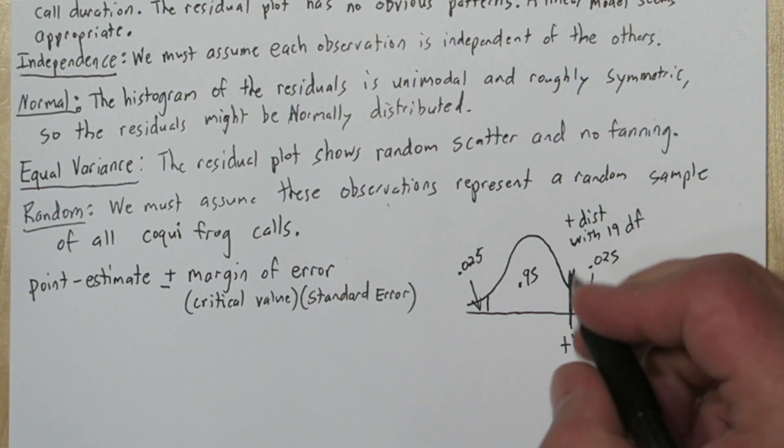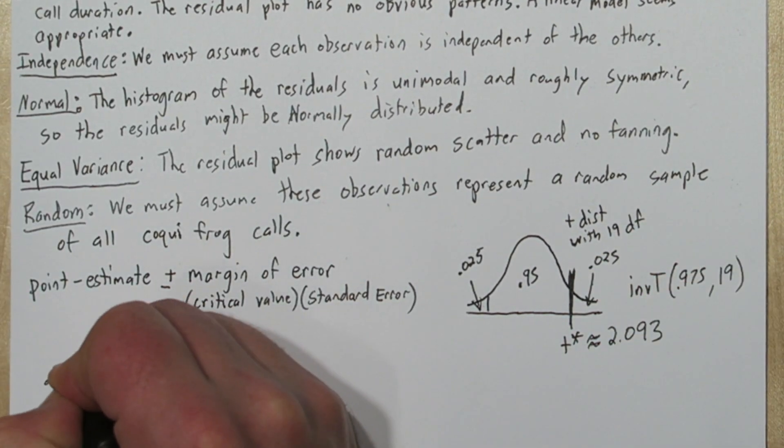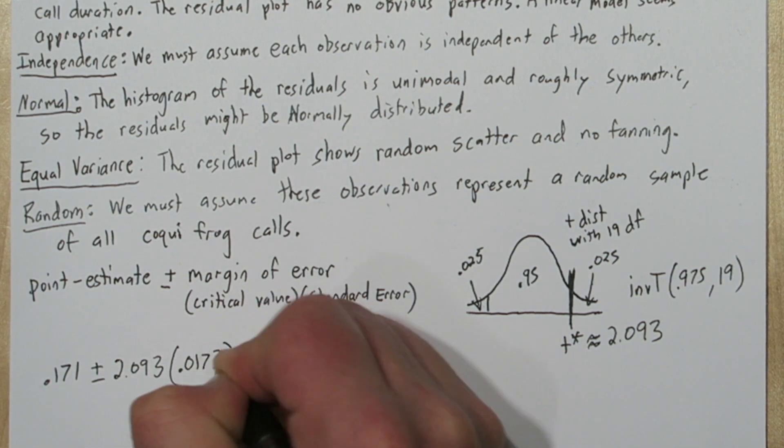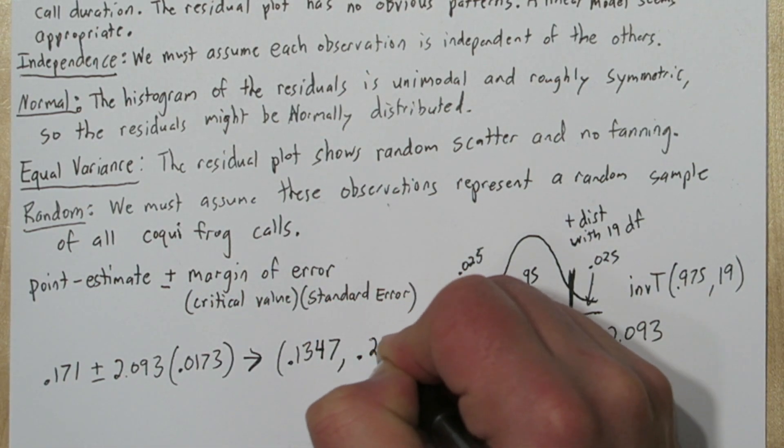Now let's build our confidence interval. Alright, here's our confidence interval. Always round the lower limit of the confidence interval down, and the upper limit up.